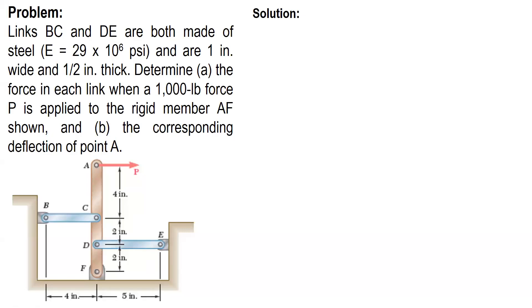Okay, in this video I am going to solve a problem on simple strain, particularly on statically indeterminate members. The links BC and DE are both made of steel with modulus of elasticity equal to 29 times 10 raised to 6 psi and are 1 inch wide and 1.5 inch thick. Determine, letter A, the force in each link when a 1,000 pound force P is applied to the rigid member EF shown, and letter B, determine the corresponding deflection of point A.